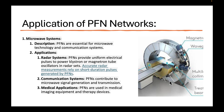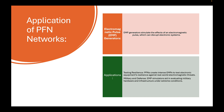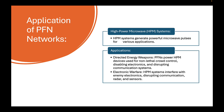In medical linacs, as we can see in this image, the magnetron is used to generate radiofrequency waves and energize electrons, which are then pulsed and directed to targeted areas to treat cancerous cells. Another application is electromagnetic pulse generation, which can be used in testing the resilience of hardware and infrastructure under extreme conditions, as well as military applications like high-power microwave systems for non-lethal crowd control, disabling electronics, and disrupting communication systems.